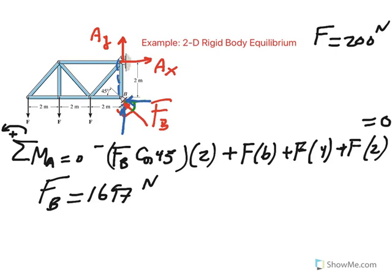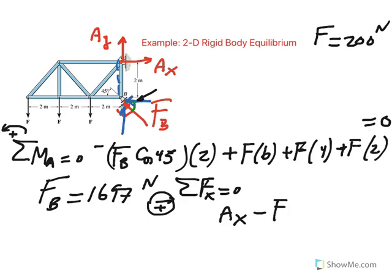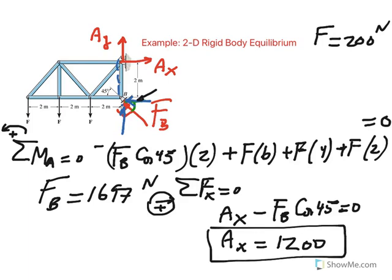Now all we have to do is find Ax and Ay by applying the other two equations. For the sum of forces in the x-direction equals 0: we have Ax and the x-component of F sub B, which is F sub B cosine 45, going in the negative direction. So Ax is positive. Since F sub B is 1697, we get 1697 times cosine 45, which equals 1200. So Ax = 1200 newtons.